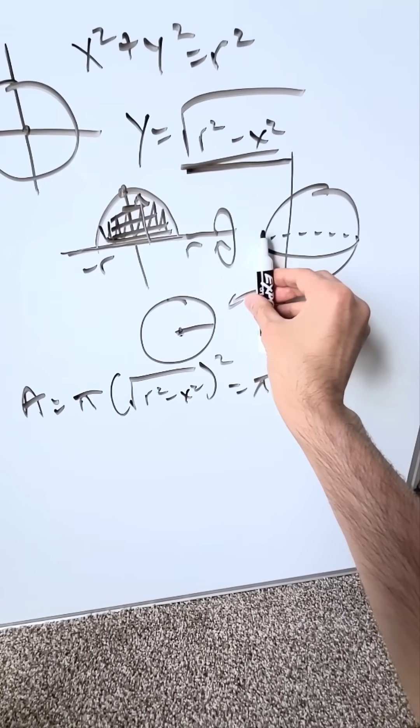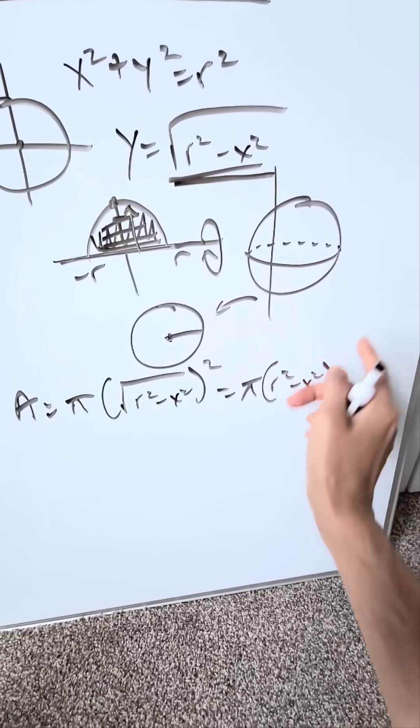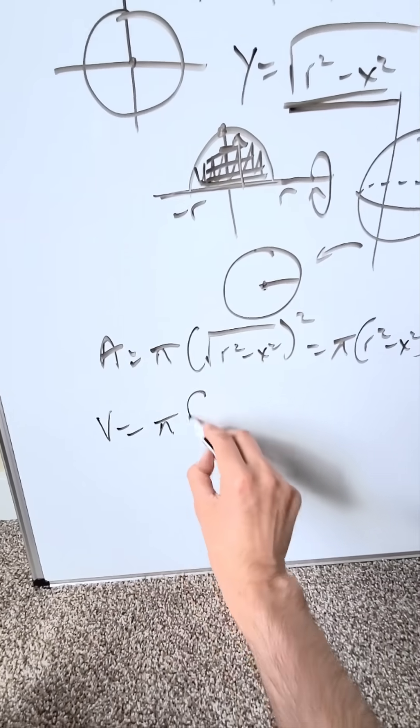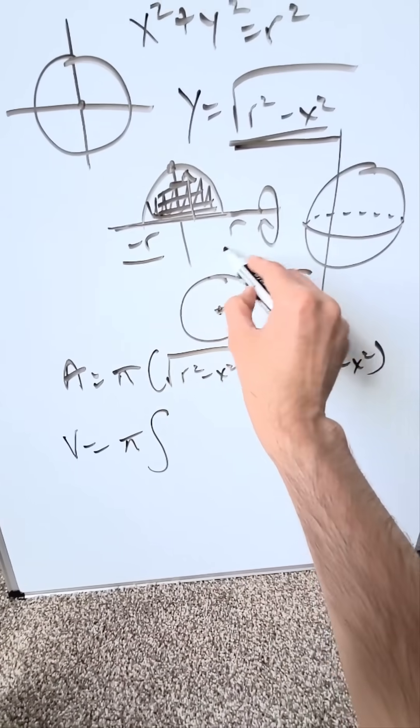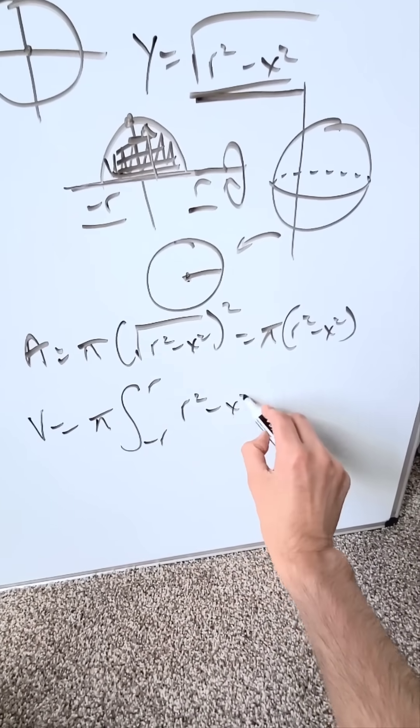You're looking at all the slices of circles. You could integrate from one end to the other end. Cumulative sum of those areas will give you your volume. Your volume is going to be that pi pushed out, lower limit minus r, upper limit r, and then you're integrating this r squared minus x squared dx.